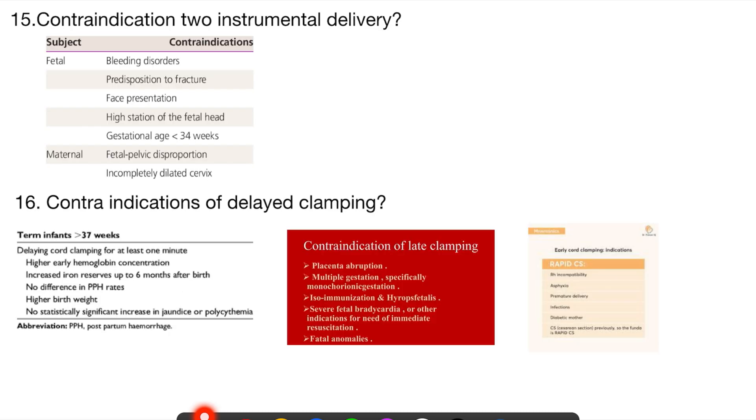Coming to contraindications, these are OB-GYN questions. One is contraindication to instrumental delivery. We have maternal contraindications and fetal contraindications. Whenever the baby is having bleeding disorders, you can't keep a forceps in there, so the baby may bleed. So bleeding disorders and predisposition to fractures—if the baby has some condition which may lead to fractures of the baby, and face presentation, how can we put a forceps in face presentation?